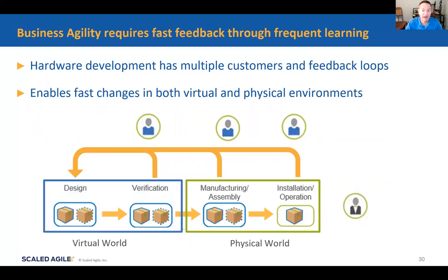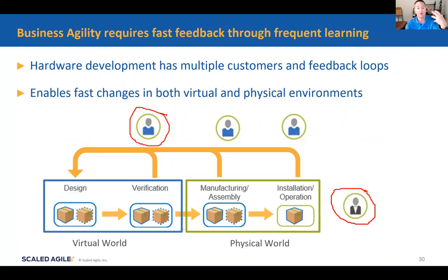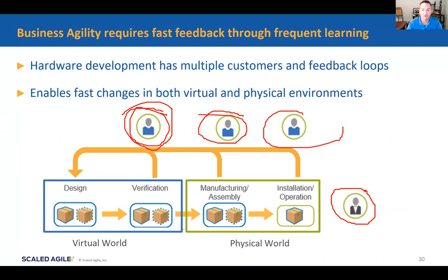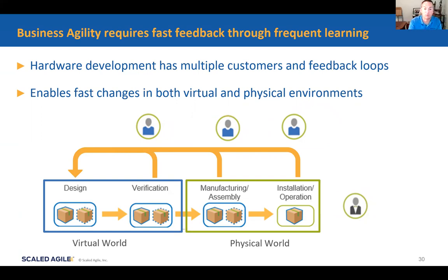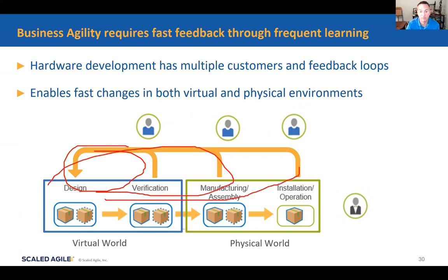Business agility requires fast feedback through frequent learning. There are many customers to hardware — not just the end customer, but other engineers, data consumers, manufacturing and assembly, operators. We need to reduce these learning cycles and have the capacity to respond to feedback. There are multiple feedback loops in hardware — where we're ideating, modeling, and simulating, as we move to manufacturing, into the operational environment, and ultimately getting feedback from the real customer.